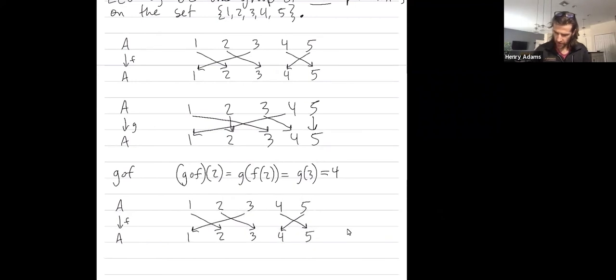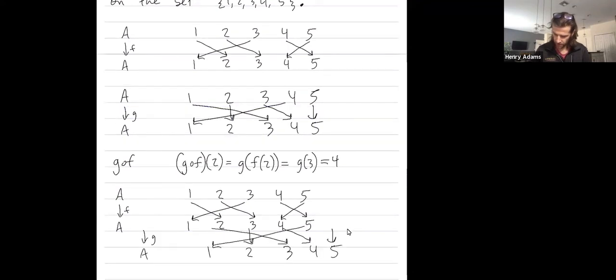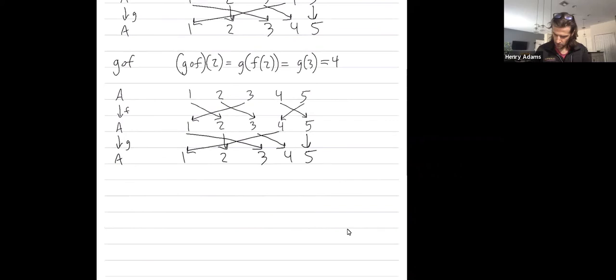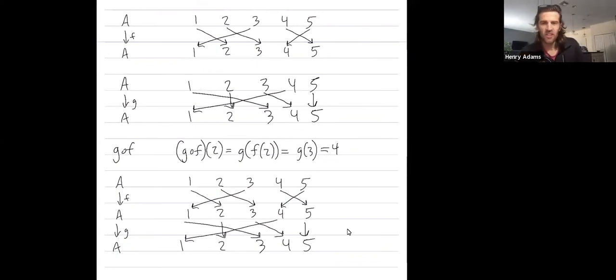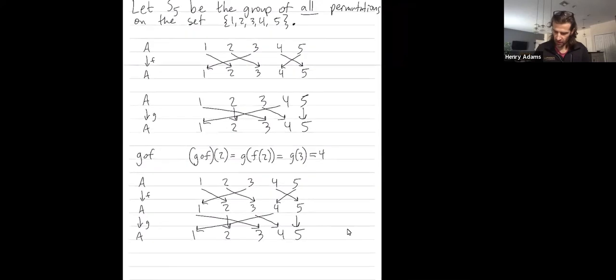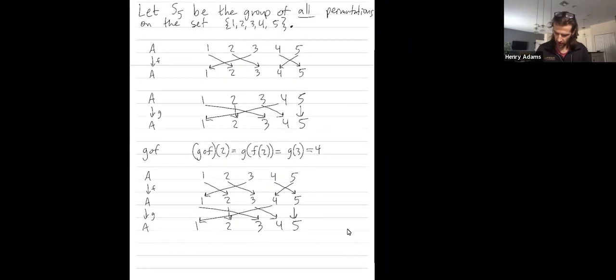So since I'm doing F first, I'm just going to copy this and put it below. And then, let me take this part of G, this second part, and copy that and paste it. So when you do F and then G, it's really concatenating these two together.